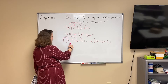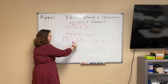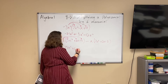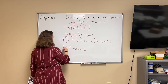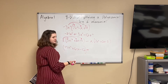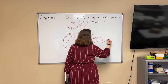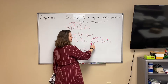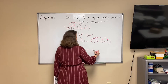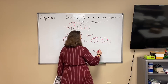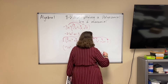We're going to start by distributing what's on the outside to every piece on the inside. 3 times 5x squared is 15x squared, plus 3 times 2x is 6x, and 3 times negative 4 gives us negative 12. Now we're going to distribute the x to all three things inside the other parentheses: x times 7x squared gives us 7x to the third, plus x times 2x gives us 2x squared, and x times negative 3 gives us negative 3x.